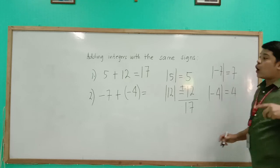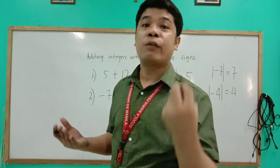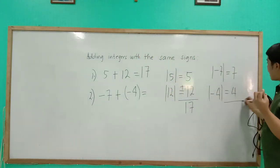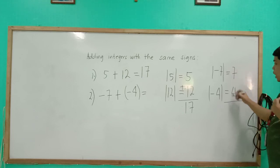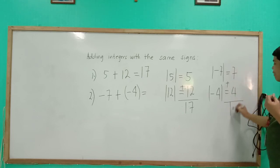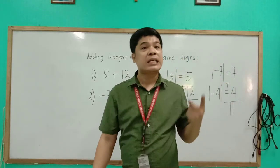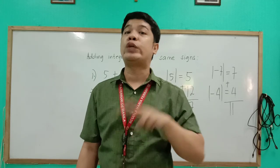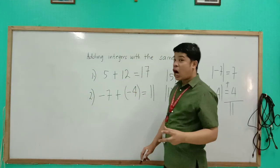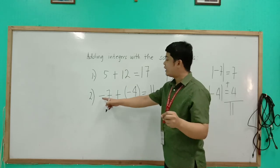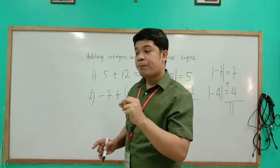According to the rule again, we will just add all the absolute values. So let's add them: 7 plus 4 equals 11. We will put here 11. Now let us look at the signs of the two integers — both are negative: negative 7 and negative 4.